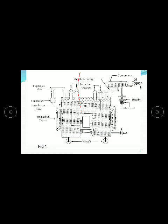Here is the oil level, and these are the HT bushings and HT terminals. This is the primary or secondary winding - primary or secondary - this is the LT winding, and these are the LT bushings and LT terminals. Here are the radiating tubes - they cool the transformer.